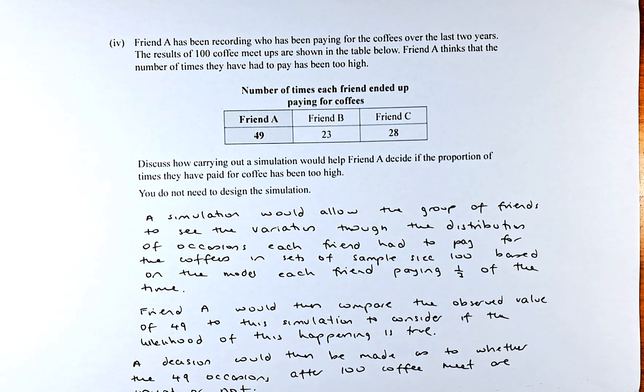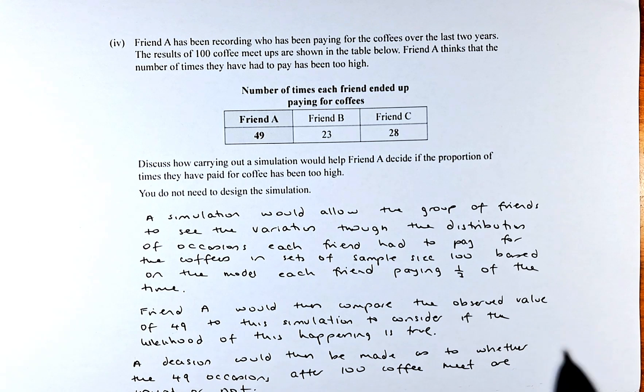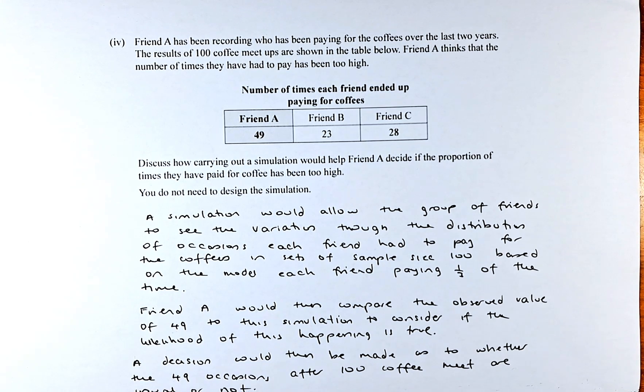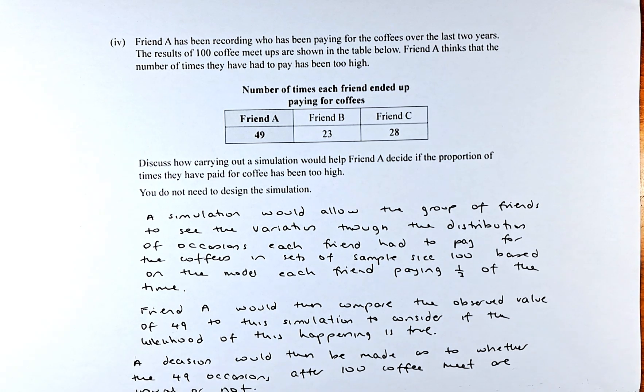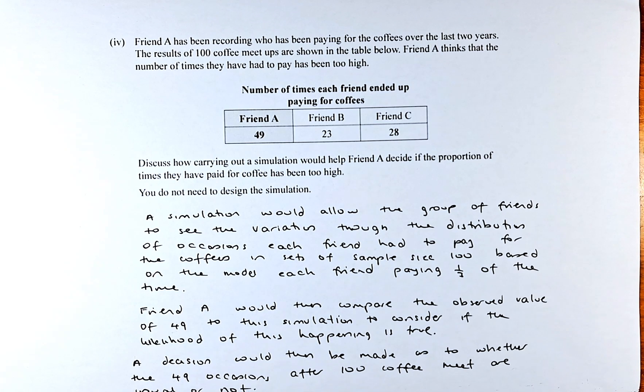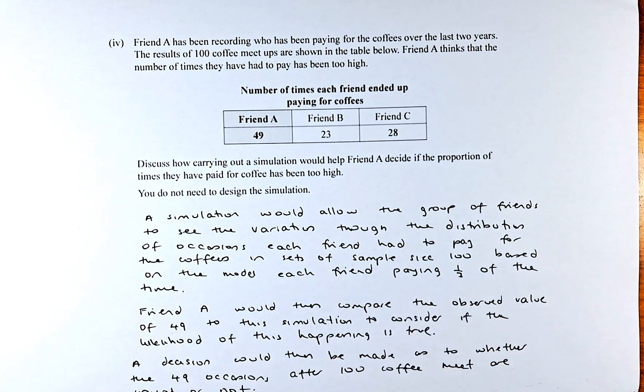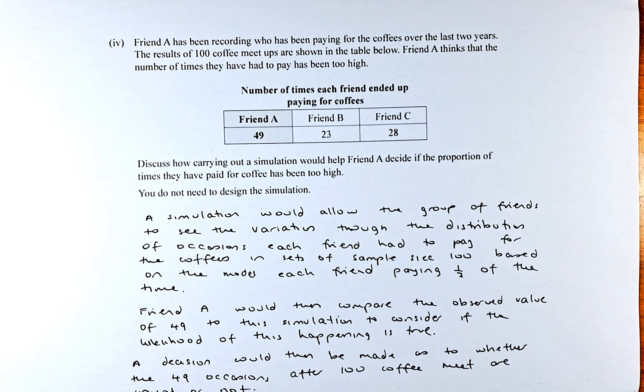Discuss how carrying out a simulation would help friend A decide if the proportion of times they have paid for the coffee has been too high. You do not need to design the simulation. We have done Level 2, we have learned how to simulate using coins, random numbers, and so forth. But in this case, we do not need to do so. I am going to read what is written in the marking schedule and hopefully you understand.